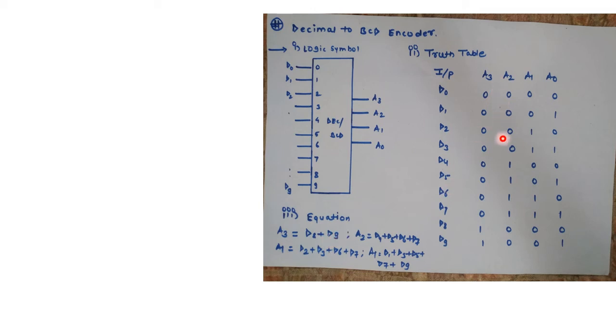Similarly when we come across a2, a2 is 1 for the 4 combinations as 4, 5, 6, 7. So it is written as a2 is equal to d4 plus d5 plus d6 plus d7.